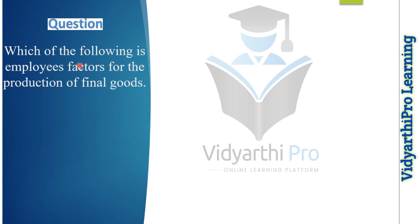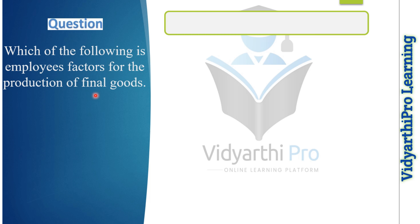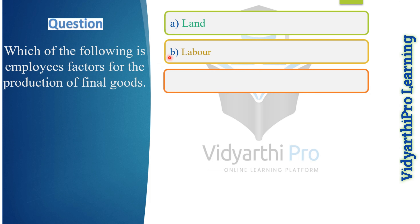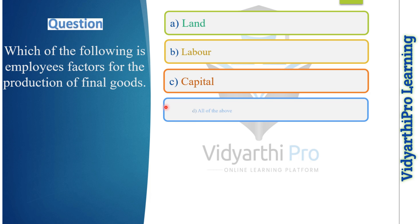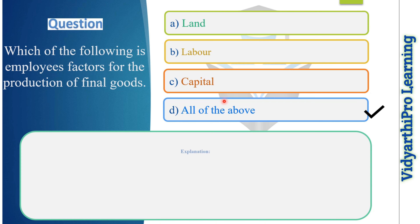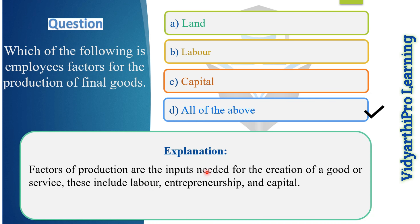Our next question: which of the following are employed as factors for the production of final goods? Options: land, labor, capital, or all of the above. The correct answer is option D, all of the above, because factors of production are the inputs needed for the creation of goods or services — these include land, labor, entrepreneurship, and capital.